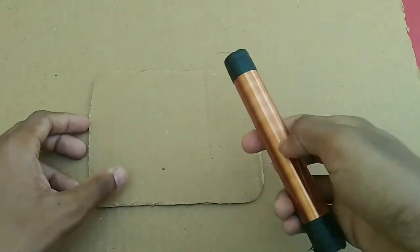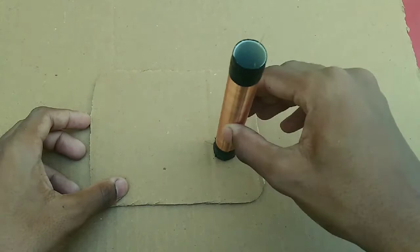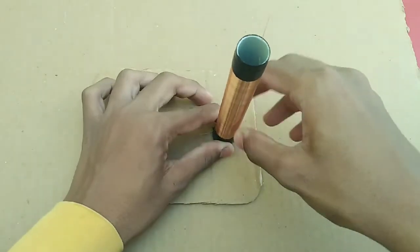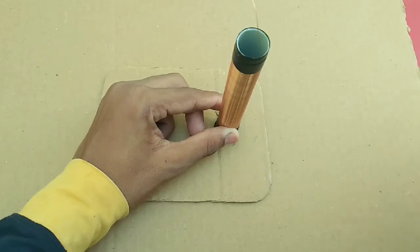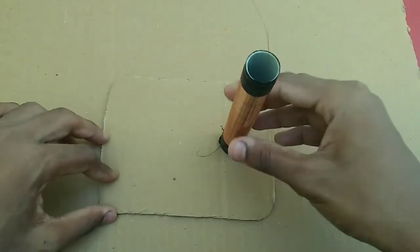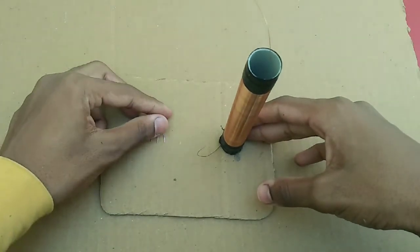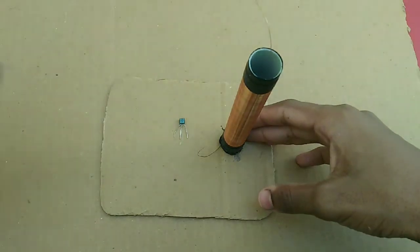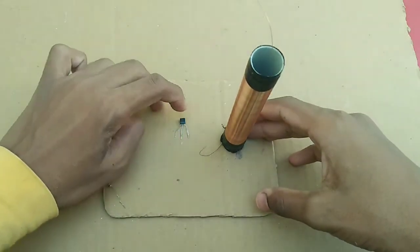Now take the first cardboard sheet and attach the coil with superglue. It should look like this. Next, place the transistor on the cardboard and secure it with superglue as well.